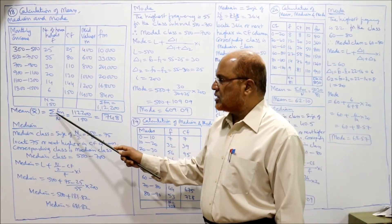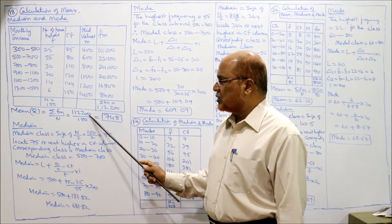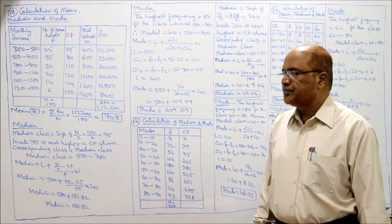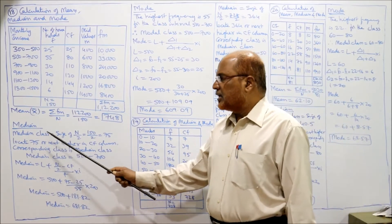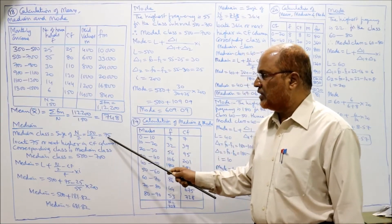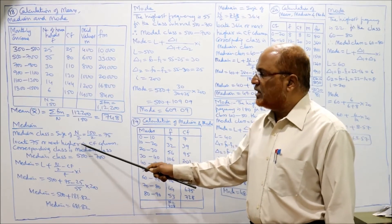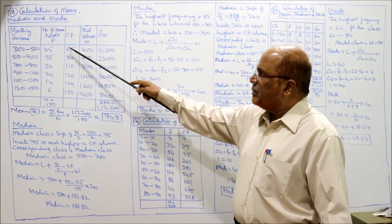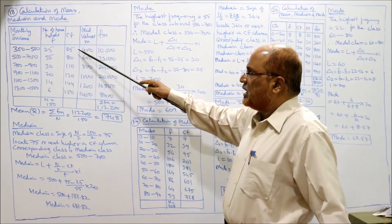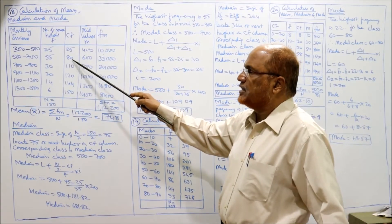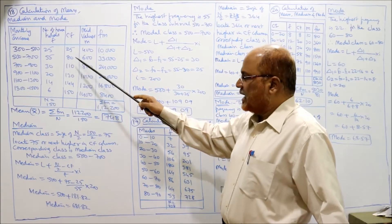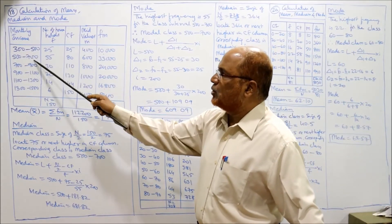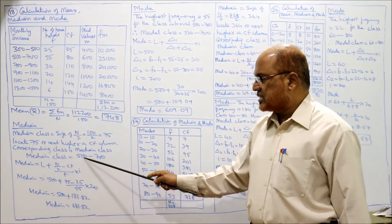Mean = ΣFM / N = 1,12,200 / 150 = 748. That is the mean value. For the median class: N/2 = 150/2 = 75. Look at the CF column — the next higher value to 75 is 80, which corresponds to the class interval 500–700. So the median class is 500–700.